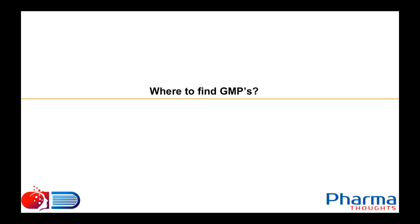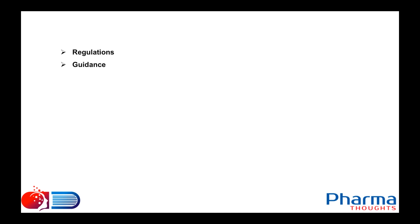How do we implement GMP? In general, GMP is implemented through two mechanisms: regulations and guidances. Before we look at the actual regulations, let us understand the difference between them.